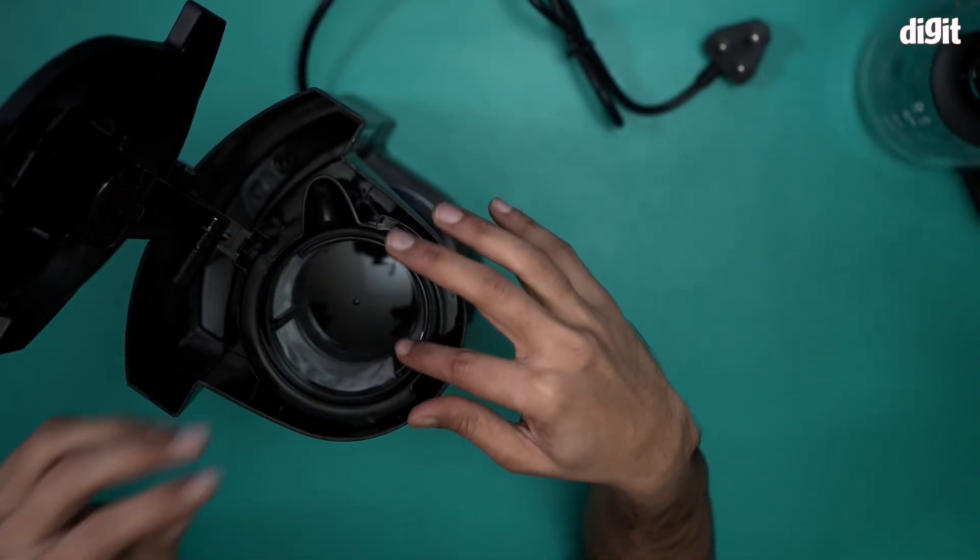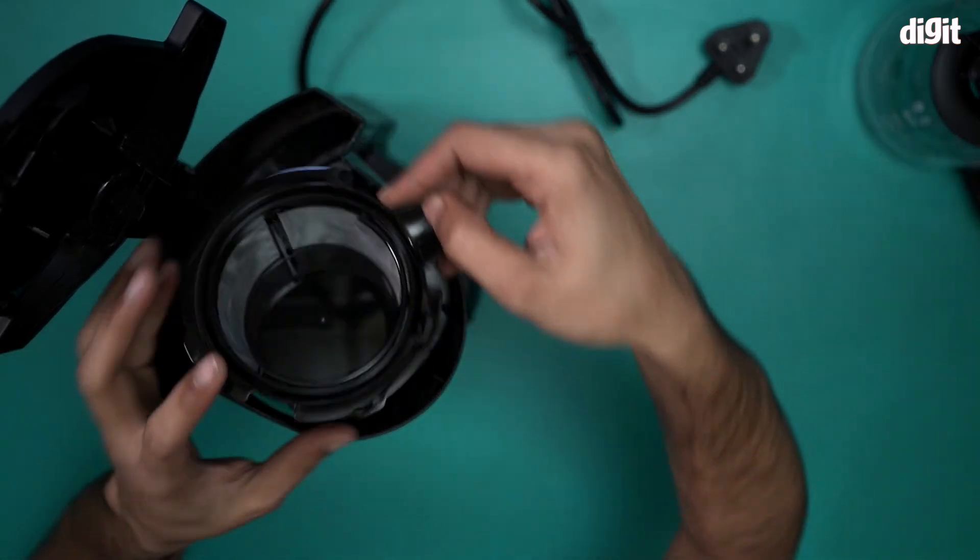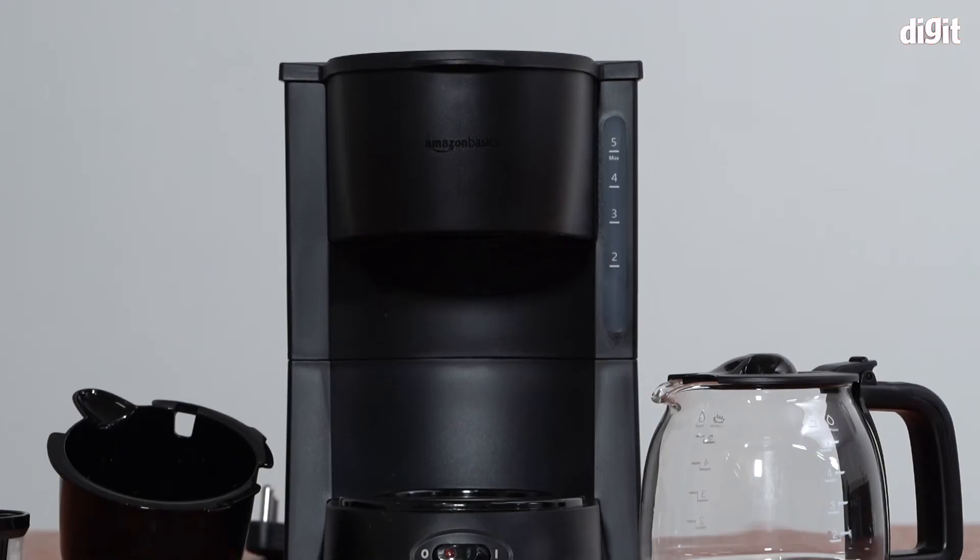There you go. This is basically the filter through which the coffee gets made. So there you go, so this is the primary machine.